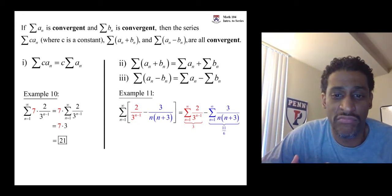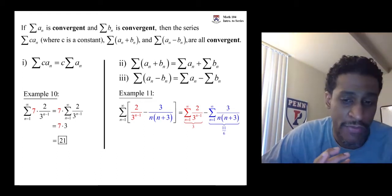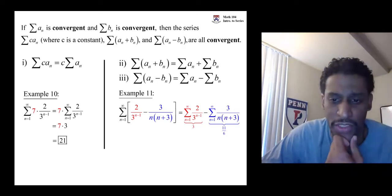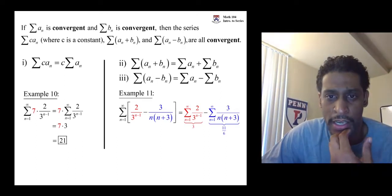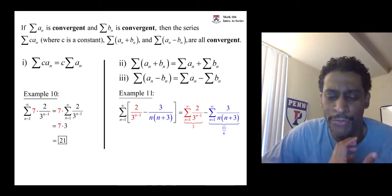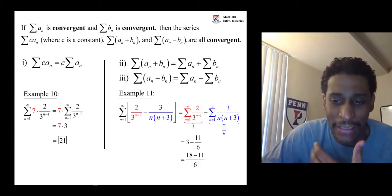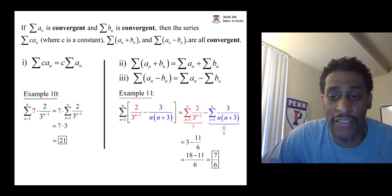Well, the new sum made by combining these two would just be the difference here. The new series which is made by the difference between these two. We just get three minus 11 over six. Eighteen minus 11 all over six, seven six.